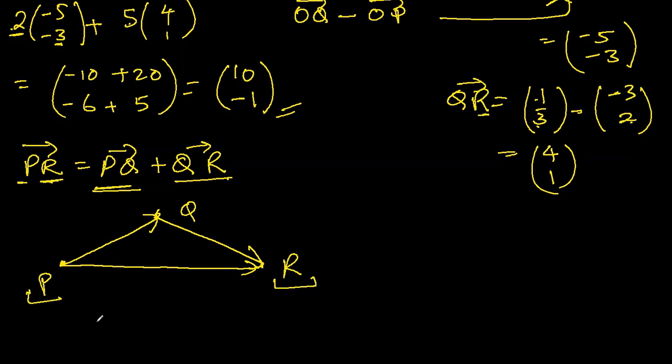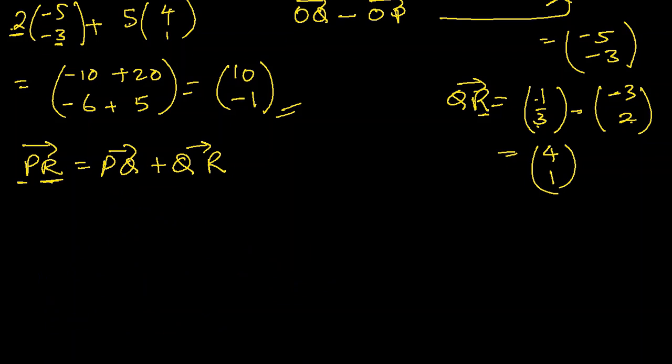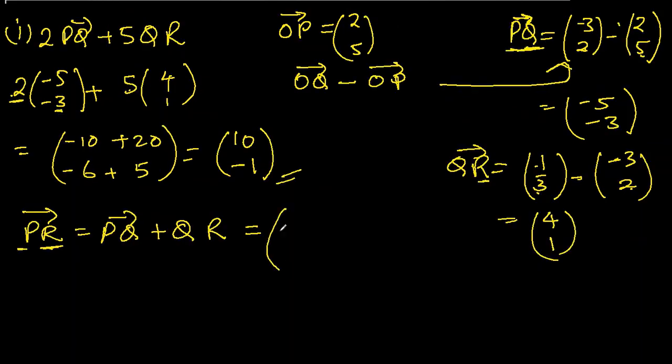I want to explain this to you so that in future, addition or subtraction doesn't matter, it should be your aim to get the vector. So PQ is (-5, -3), QR is (4, 1). So -5 plus 4 equals -1, -3 plus 1 is -2.